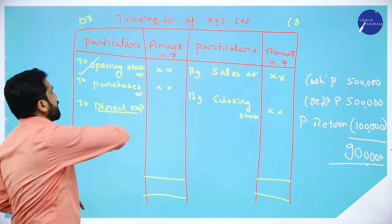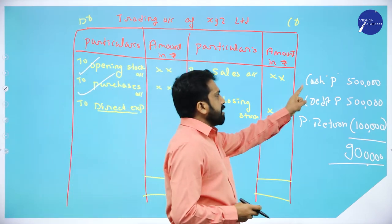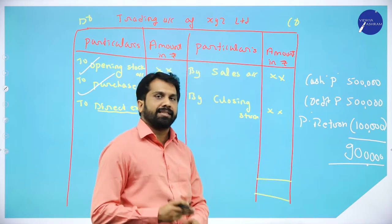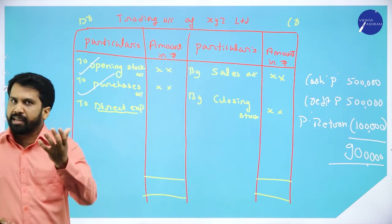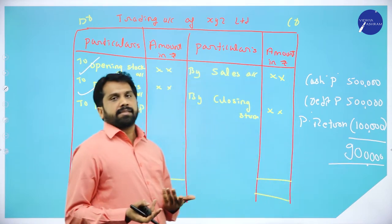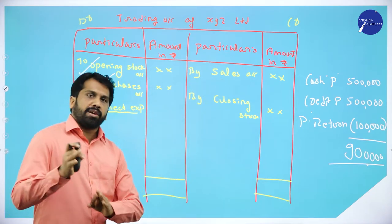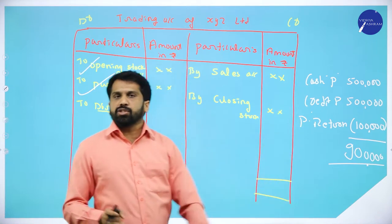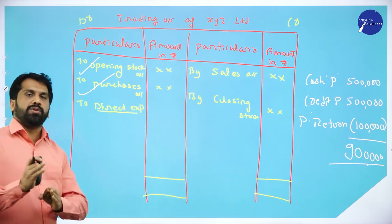Similarly for sales — they may give cash sales and credit sales. Add both to get total sales, say 10 lakh. If they also give a sales return, it means the customer returned damaged goods back to you. So 10 lakh minus 1 lakh gives 9 lakh as your net sales. The same adjustment logic applies to both purchases and sales. In your question paper they may give the figure directly or with these adjustments.